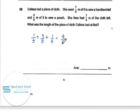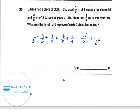Four-fifths plus one-quarter. We change all to twentieths. This is sixteen, plus five, this is twenty-one-twentieths. So the answer is twenty-one-twentieths meters.